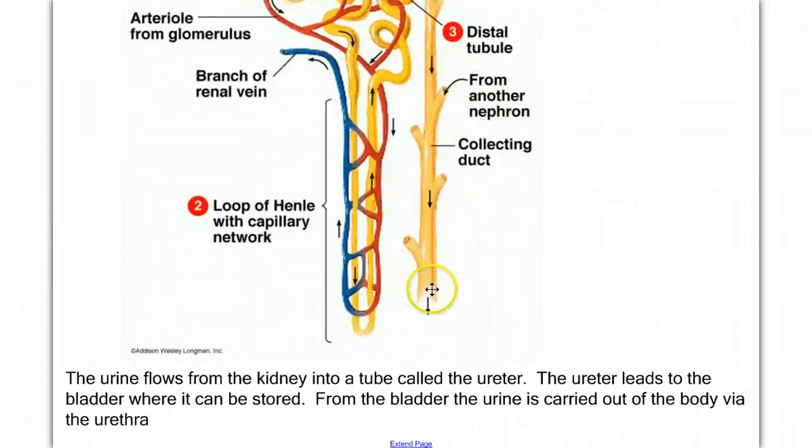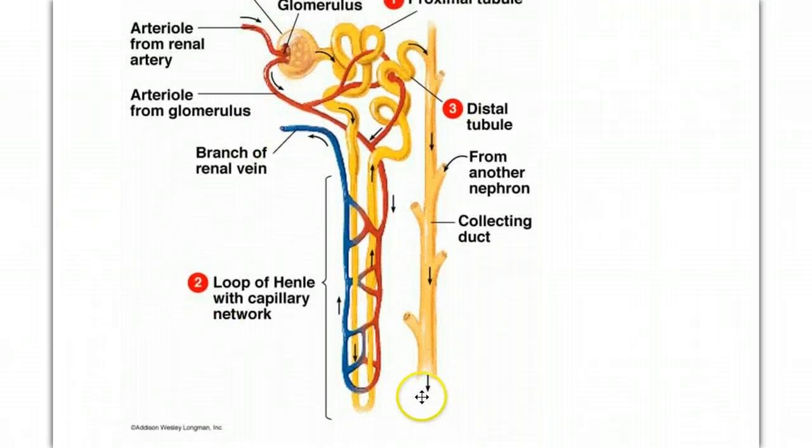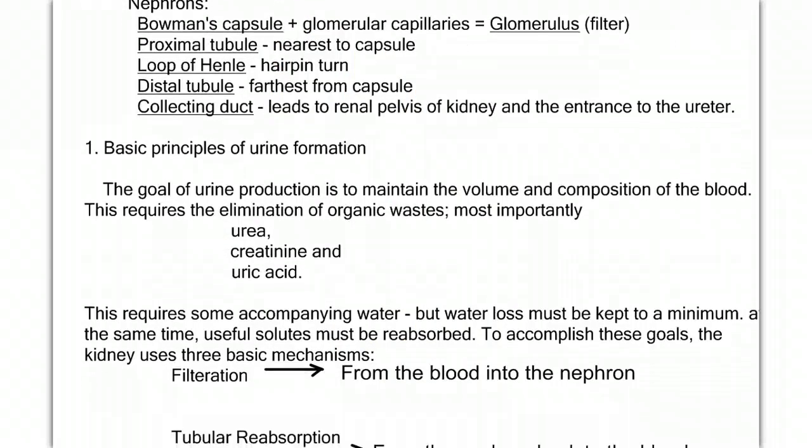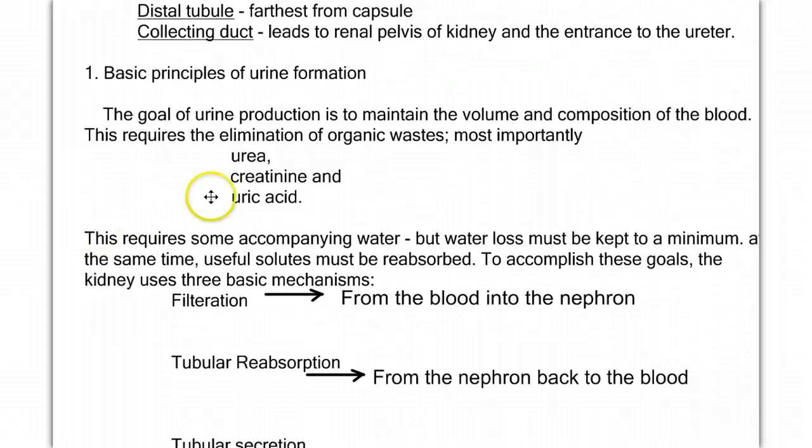Again, the final product being made as we filter the blood and make the adjustments to that filtrate is urine. Now, the basic principles of urine formation: the goal of urine production is to maintain the volume and composition of the blood, and this requires the elimination of organic waste, most importantly urea, creatinine, and uric acid.